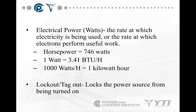Electrical power is the rate at which electricity is being used, or the rate at which electrons perform useful work. A couple of equivalent values you should know: horsepower is 746 watts. One watt is 3.41 BTUs per hour, which is a measure of heat or energy being produced — BTU stands for British thermal unit. A thousand watts per hour is a kilowatt hour. Your electric company bills you in kilowatt hours.